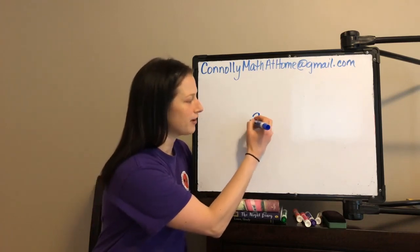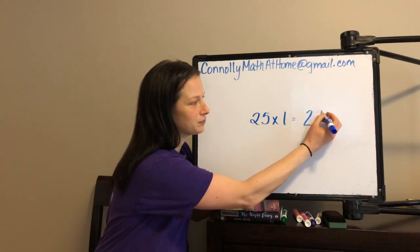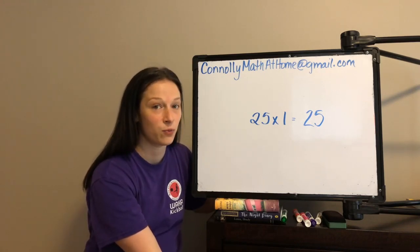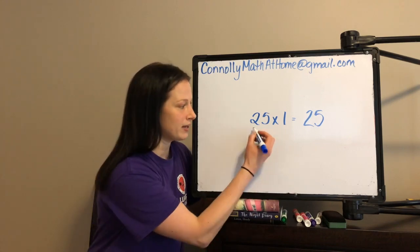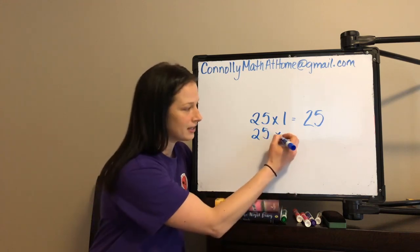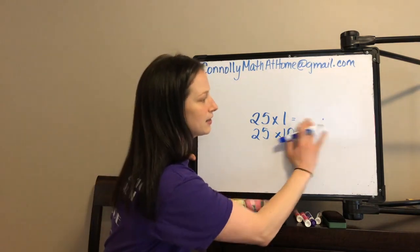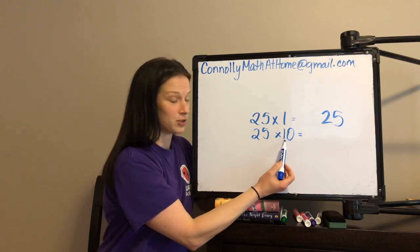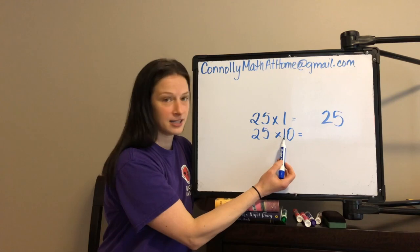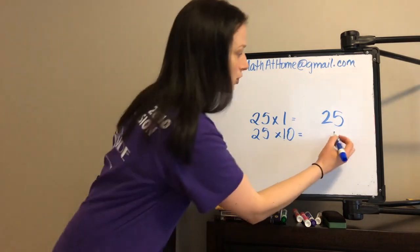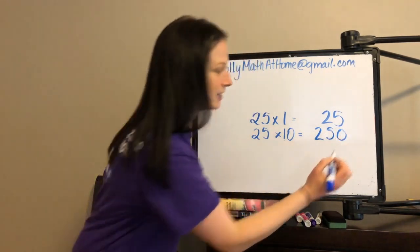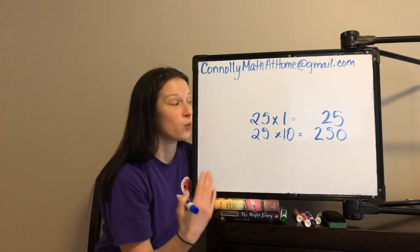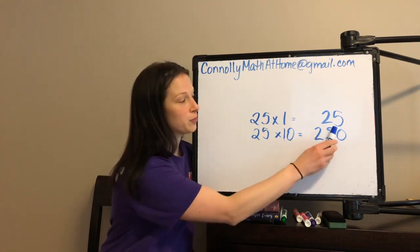We are going to start with 25 times 1, and as you know, that's 25. We've been thinking about what happens when one of the factors gets 10 times greater. So what would happen if I had 25 times 10? You'll see I'm writing it funny for a reason. This factor here got 10 times greater, so when one factor gets 10 times greater, the product also gets 10 times greater. We're not adding a zero — that's not what's happening.